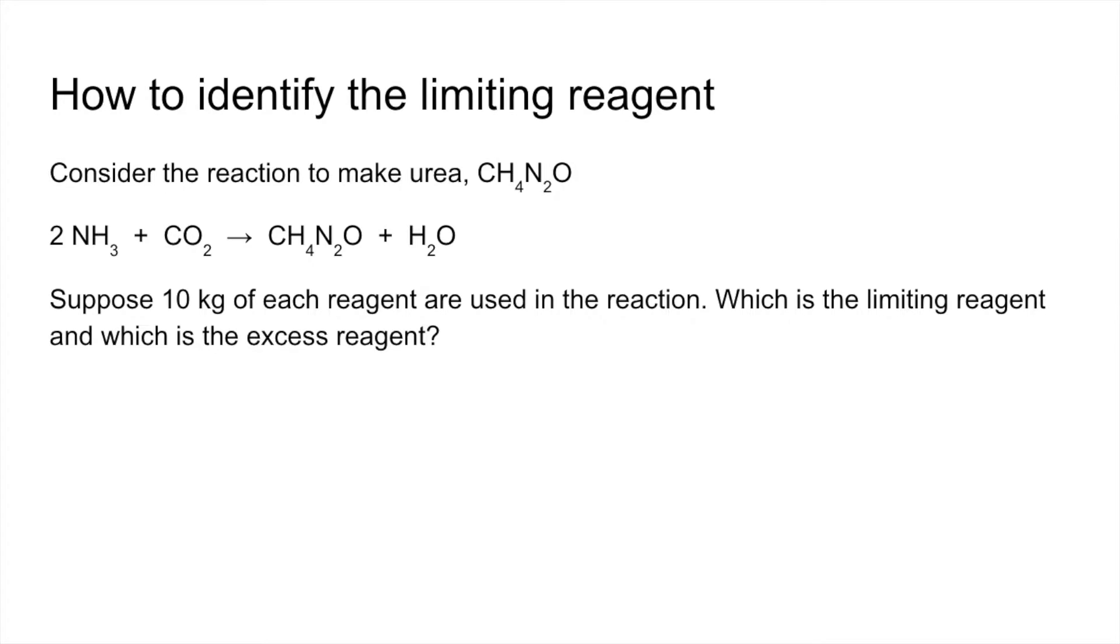So the first thing obviously is to convert those masses to moles. So the moles of ammonia, 10,000 grams, that's 10 kilos, divided by its MR, 588 moles. Likewise for CO2, 10,000 divided by 44 is 227 moles.